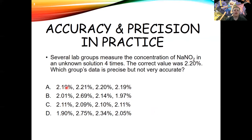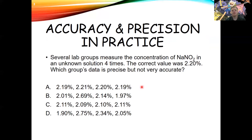The first group's data: 2.19, 2.21, 2.20, and 2.19. The average is pretty close to 2.20, within one percent — so it's accurate. The question asks which data set is not very accurate, so it's not that one, because it is accurate and also fairly precise.